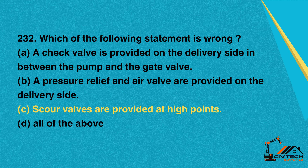Question 232: Which of the following statement is wrong? A. A check valve is provided on the delivery side in between the pump and the gate valve. B. A pressure relief and air valve are provided on the delivery side. C. Scour valves are provided at high points. D. All of the above. Correct option: C. Scour valves are provided at high points.